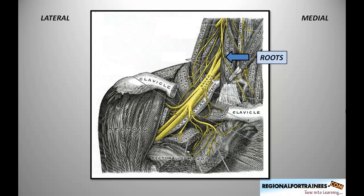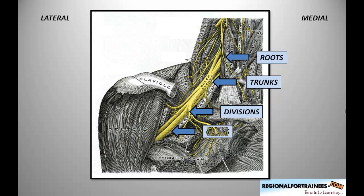These nerve roots come together to form trunks — namely the upper, middle, and lower trunk — which divide into anterior and posterior divisions, which then come together differently to form cords: lateral, medial, or posterior. These three cords divide into terminal branches including the median nerve, ulnar nerve, radial nerve, musculocutaneous nerve, and axillary nerve.